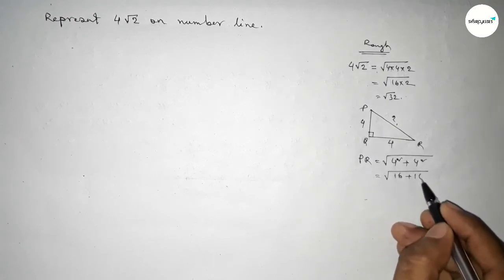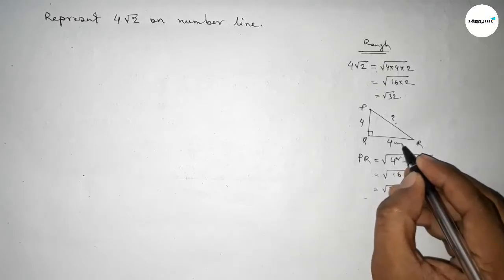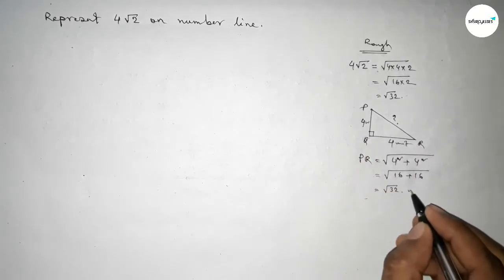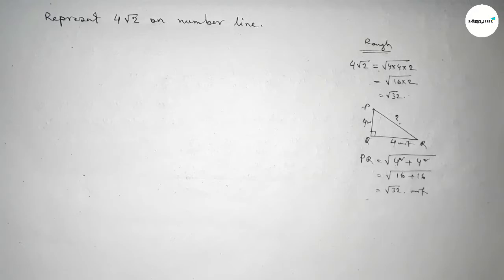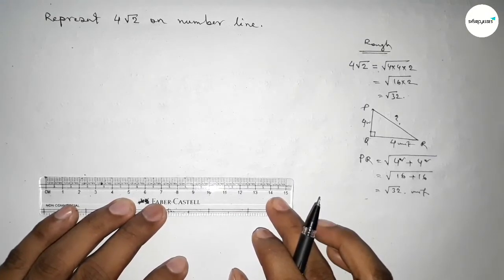So this is 16 plus 16, so root 32 unit. So write down here unit and here also unit and here also unit. So first we have to draw a number line. So first of all, drawing here a line of any length and taking here arrow mark on both side, and now taking here starting number 0.